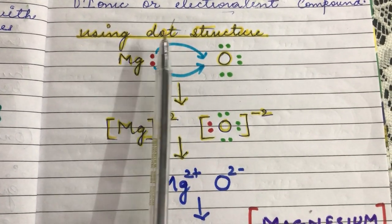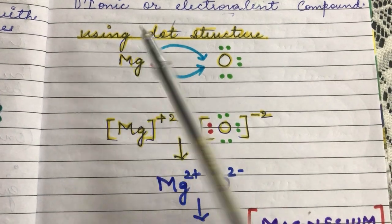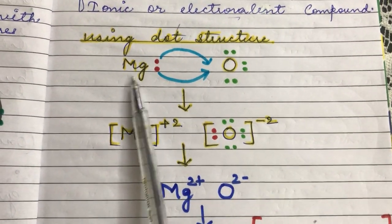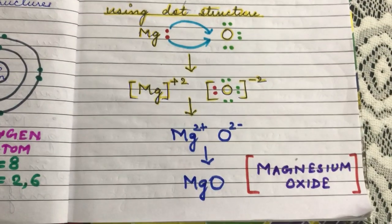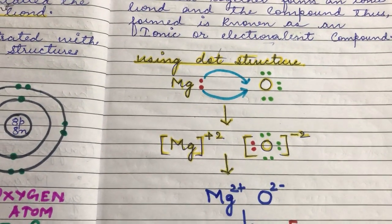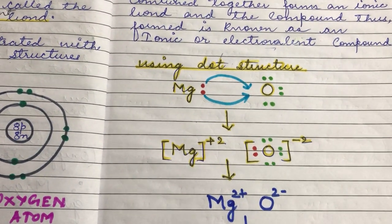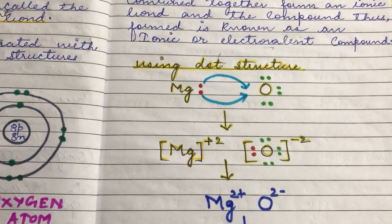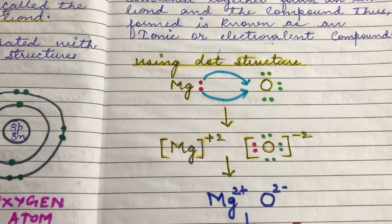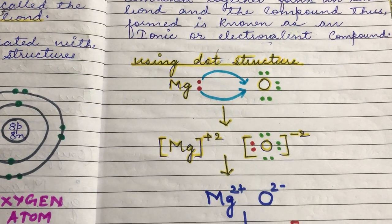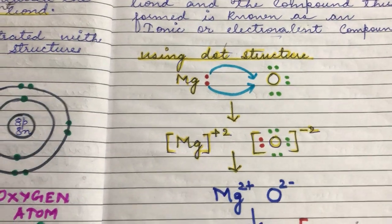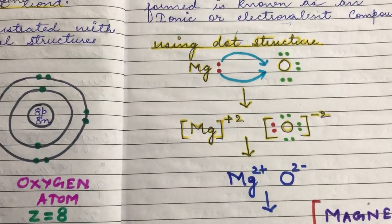The metal will always lose electrons and the non-metal will always gain electrons from the metal — and this is how we form electrovalent bonds. To review concepts related to ion formation, covalent bonding, or metals and non-metals, please refer to the video links shared in the description box. Thank you.